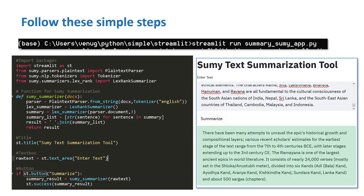After that we are going to define a function named sumy_summarizer. What it does is take input from the user and then tokenize it using the tokenizer function. After we have tokenized it, we are going to create a variable named summary, and we are going to apply the LexRankSummarizer function on the input gotten from the user.